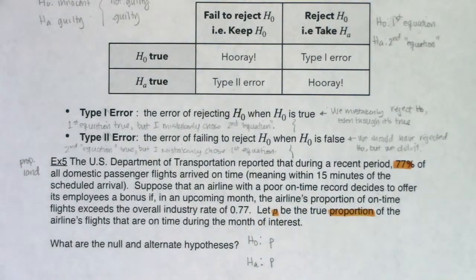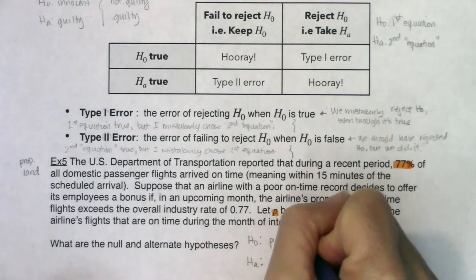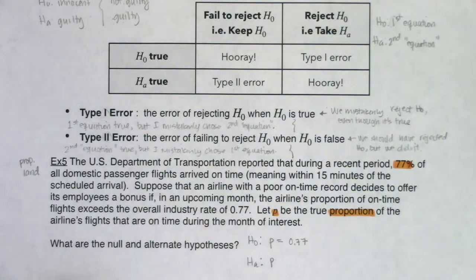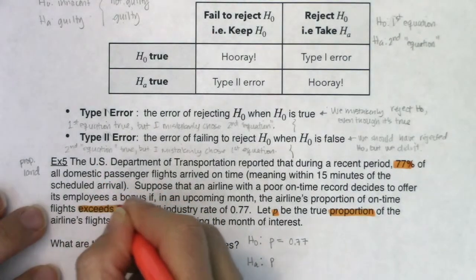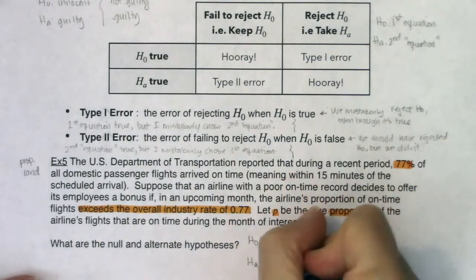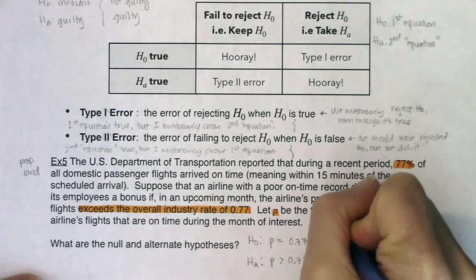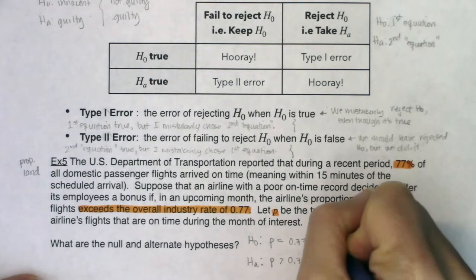The reason they'll have p's is because we're in proportion land. H naught gets an equal sign — we keep the status quo, nothing new happens: H naught: p = 0.77. For the alternate, the key phrase is 'exceeds the overall industry rate of 0.77,' so we use greater than. This is a right-tailed, one-sided test: H_A: p > 0.77.